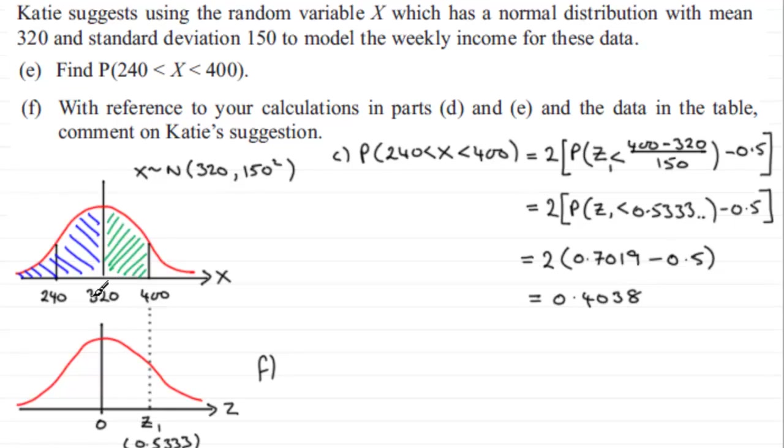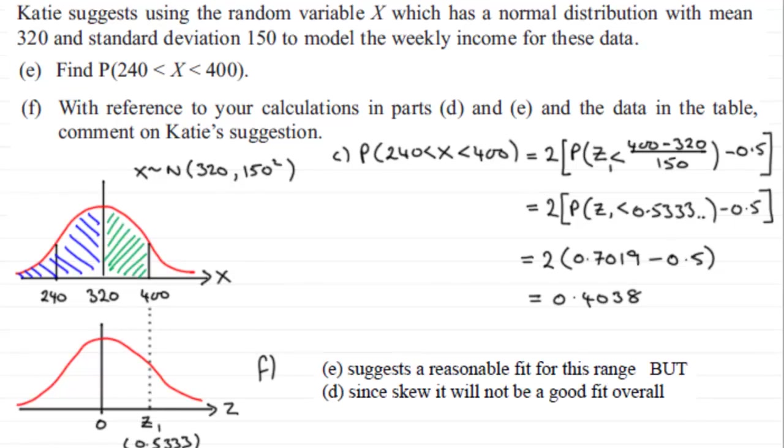So I'd expect the mean to be a little higher. Remember it was in an earlier calculation 316, it's now 320, so it's slightly higher. I can expect it then to be fairly reasonable in this area here, but because of the positive skewness it's not going to be a good fit necessarily overall.